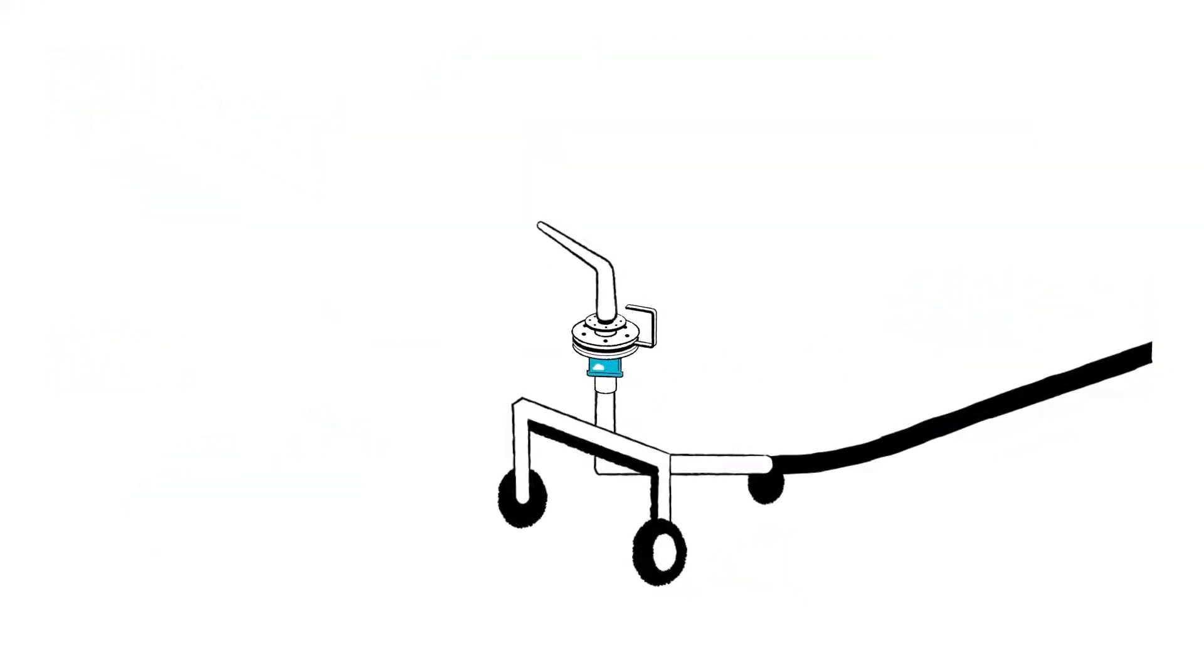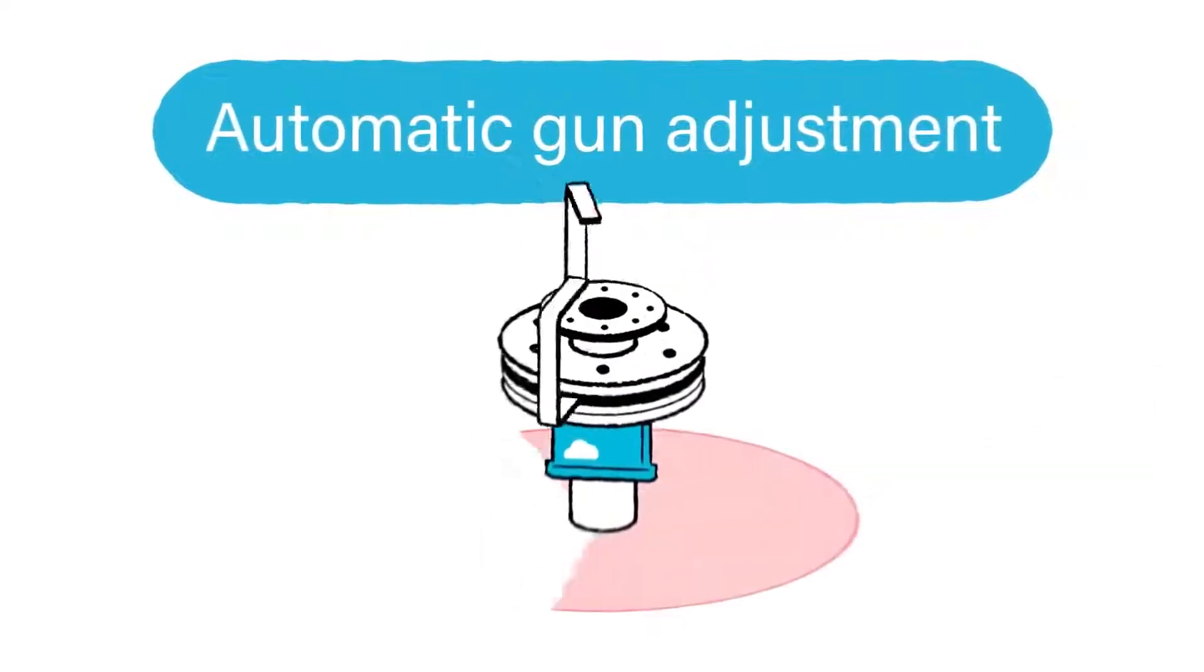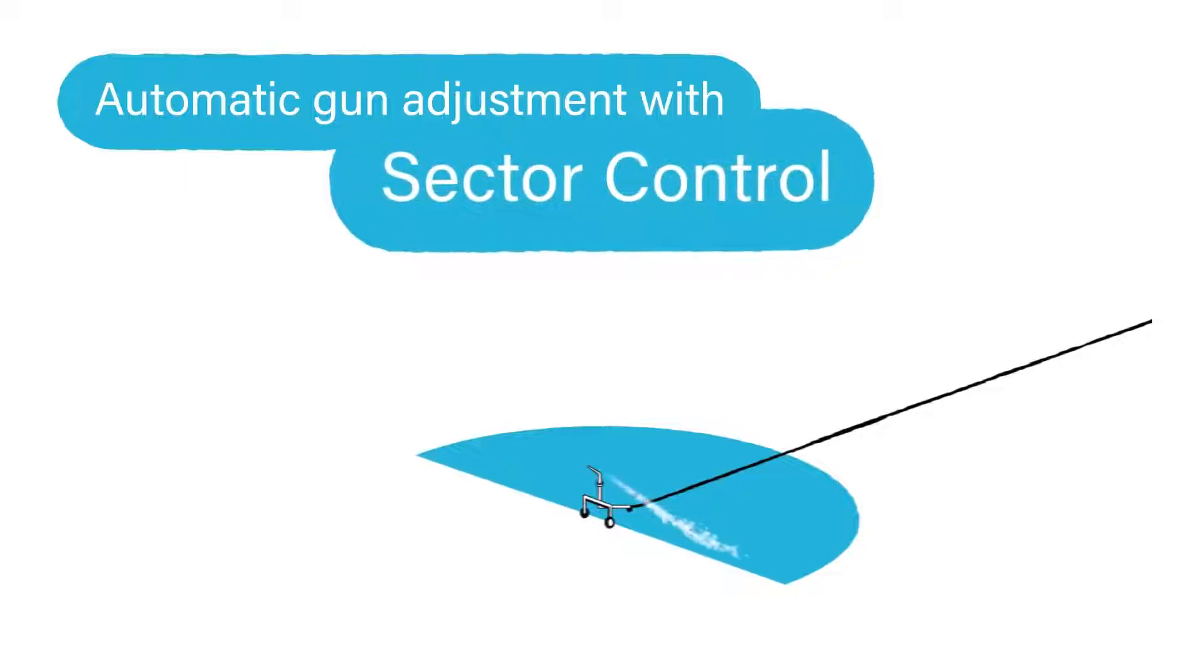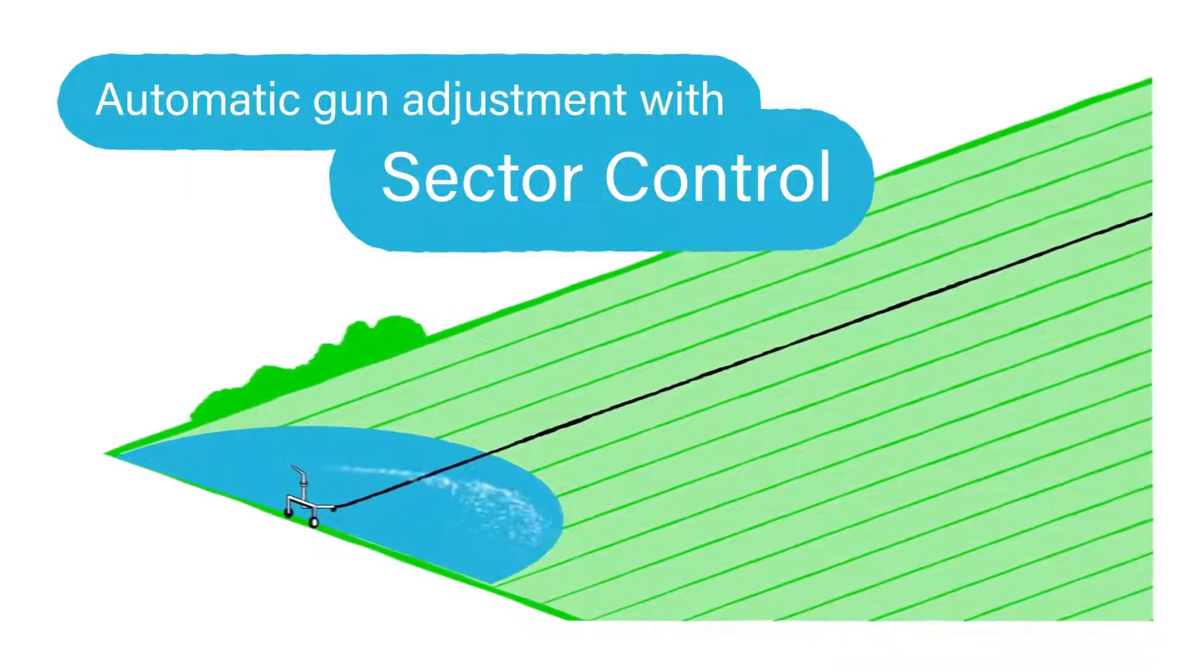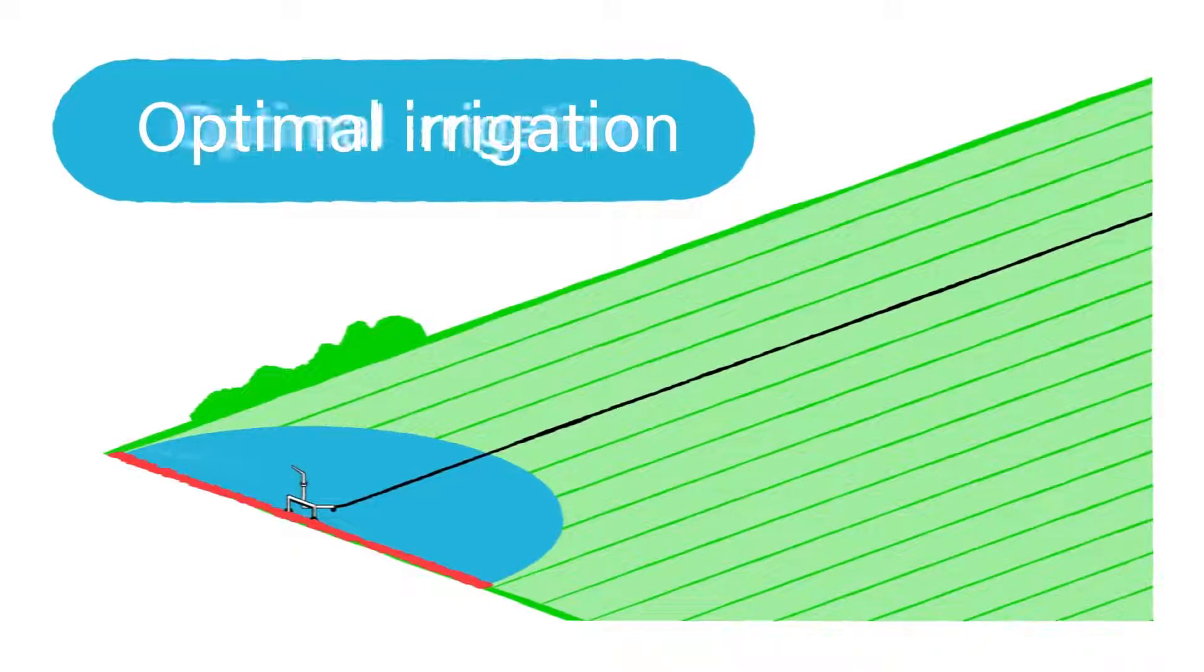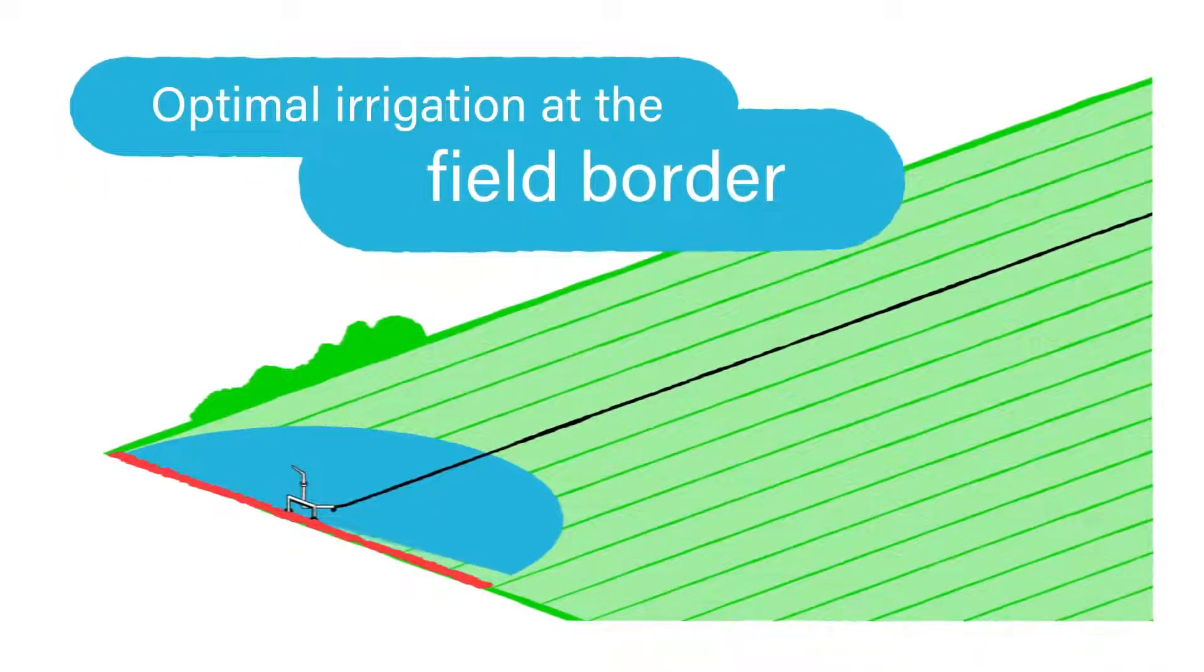Adjust your irrigation sector automatically with Rain Dancer sector control. Pull the gun cart until the end of the field. The automatic sector control takes care of optimal irrigation at the field border.